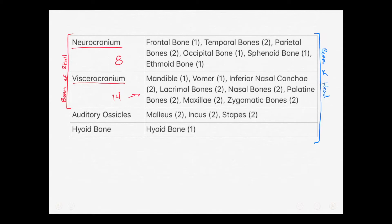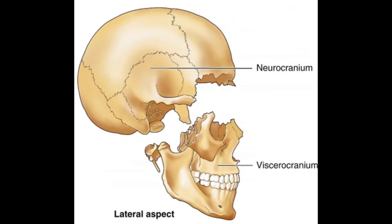If I ever mention the bones of the skull, I'm not referring to the auditory ossicles or the hyoid bone. If they mention bones of the head, it's all four groups. But bones of the skull excludes the auditory ossicles and the hyoid bone. Looking at the next slide, you can see the neurocranium and its eight bones, and below it the viscerocranium making up the facial bones.